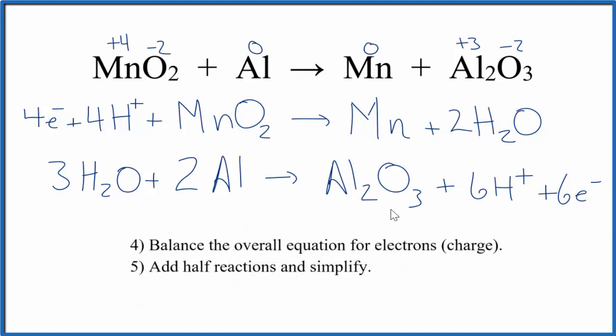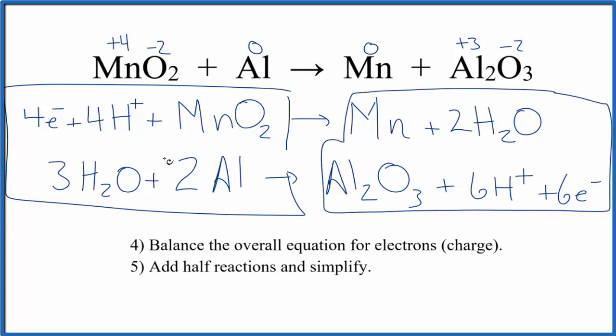Now we need to balance the overall equation for charge. Think of it this way. Right here, we have the reactants. These are all reactants reacting to form the products over here. In the reactants, we have four electrons. In the products, we have six. That isn't balanced, so we want to get those to be the same on both sides.